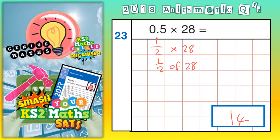However, that's only going to work if it's 0.5. What would you do if it was 0.4? Well,